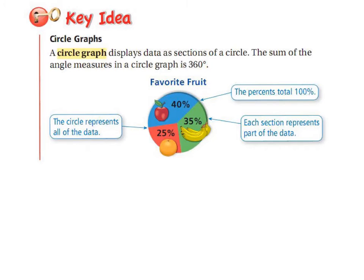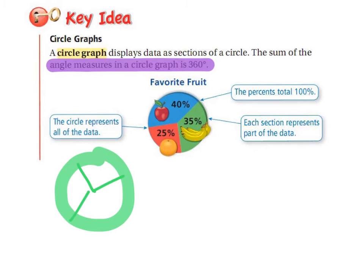Here is a definition for a circle graph and a picture of what one looks like. A circle graph displays data as sections of a circle. The sum of the angle measures in a circle graph is 360 degrees - that's something I would suggest you write down. The percentages in a circle graph need to add up to 100%. If you look at this circle graph showing favorite fruit, 40% chose apples, 25% oranges, 35% bananas - that adds up to 100% because it's a full circle. Each section represents part of the data.